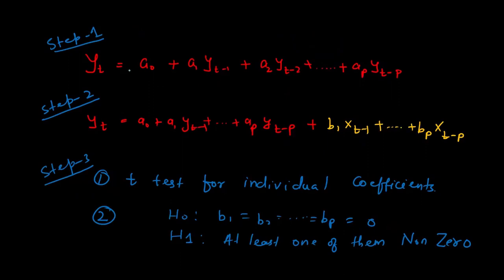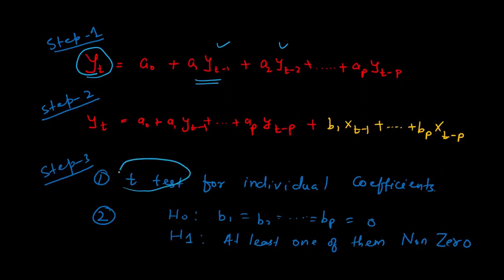There are three important steps. First, build a model using only lags of the same variable — if predicting Yt, take lags Yt-1, Yt-2, up to Yt-p. Second, add the lags of Xt and re-estimate. Then find out how many coefficients on the lags of Xt are significant, using a t-test for individual coefficients and an F-test to test them jointly. The null hypothesis is that B1, B2, up to Bp are all zero; the alternative is that at least one is non-zero. If one is non-zero, we conclude that Xt Granger causes Yt.